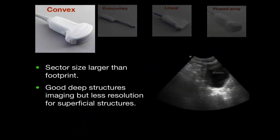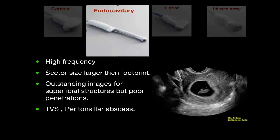The convex probe has a sector size larger than the footprint of the probe, and is excellent for abdominal or pelvic exams because of deeper penetration. The transvaginal is a high-frequency probe giving outstanding image quality, but without deep penetration — used mostly for transvaginal exams, though it can also be used intraorally, for example to see a peritonsillar abscess.